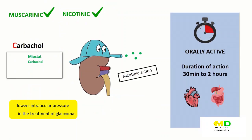Carbachol has both muscarinic and nicotinic actions. It is resistant to cholinesterase and orally active, with a duration of action ranging from 30 minutes to 2 hours. Carbachol has profound effects on both the cardiovascular and GI systems. It can cause release of epinephrine from the adrenal medulla by its nicotinic action. When administered into the eye, it stimulates the effects of acetylcholine, causing miosis. Due to its high potency, receptor non-selectivity, and relatively long duration of action, carbachol is rarely used. Intraocular use provides miosis for eye surgery and lowers intraocular pressure in the treatment of glaucoma.